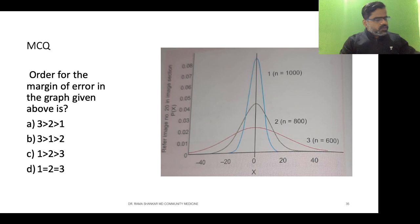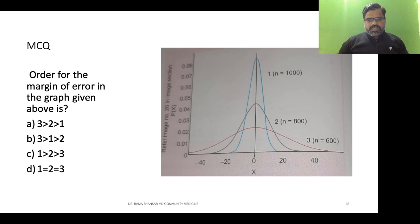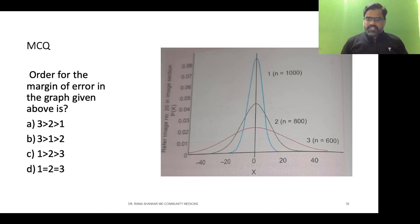As the sample size decreases, the possibility of error is more, and as the sample size increases, the possibility of error is less. In graph three the sample is 600, graph two is 800, and graph one is 1000. The best way to understand this concept: when we do census enumeration we count each and every individual, so the possibility of error is very less. But when you take a sample, there is a possibility of error related to sample size.